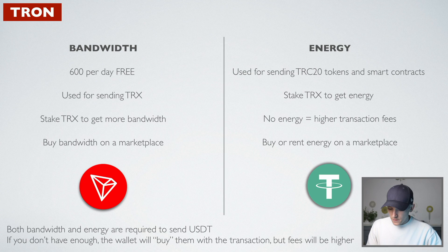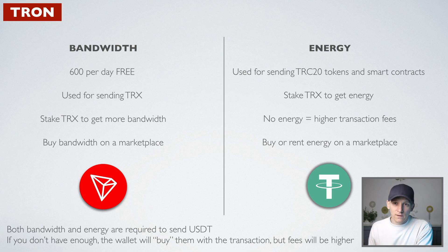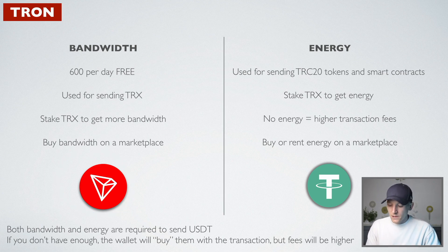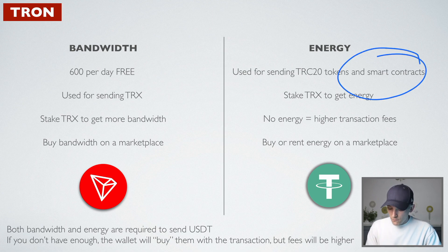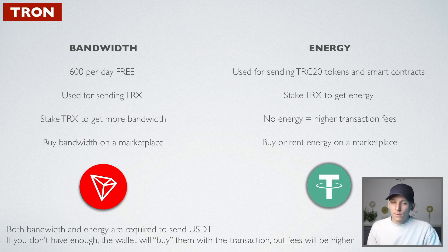Now let's go over to energy. What is energy? Energy is what you use to send TRC20 tokens — these are tokens built on top of the Tron blockchain, not TRX itself, like USDT. We also pay energy if we want to interact with smart contracts. For example, if you want to swap USDT for another coin, you interact with a smart contract on the DEX, and you'll be paying that fee in energy.